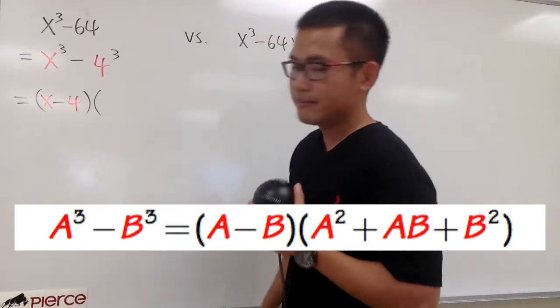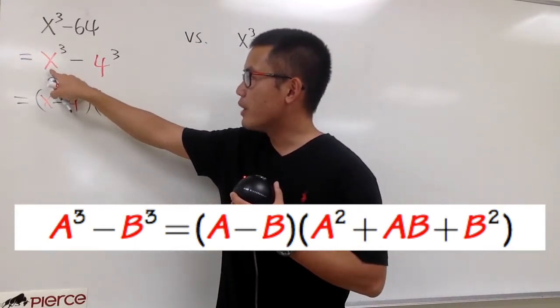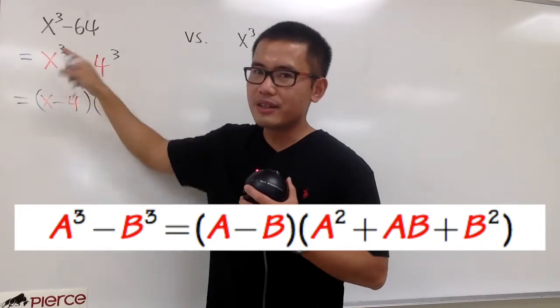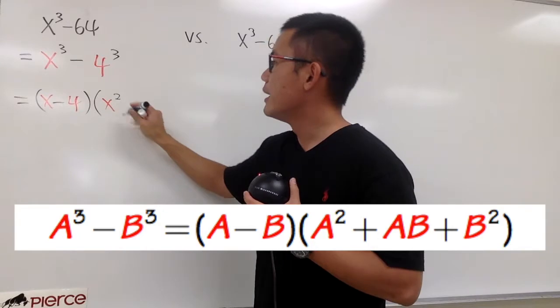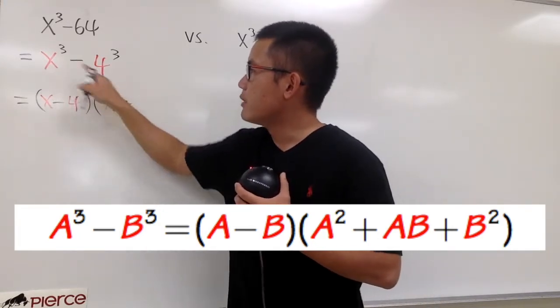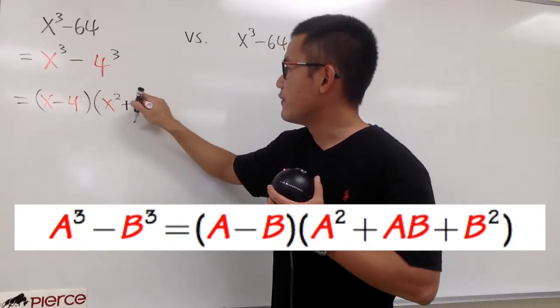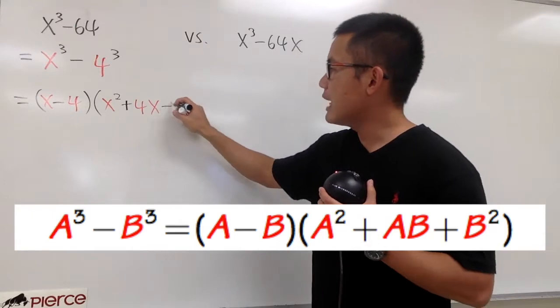And now for the second one, for the second factor, you know it's going to be x squared. You take the a, the first term in red, right here. So, we will have the x squared. And it's going to be plus ab. This times that. And let's put down the 4 first, and then the x.